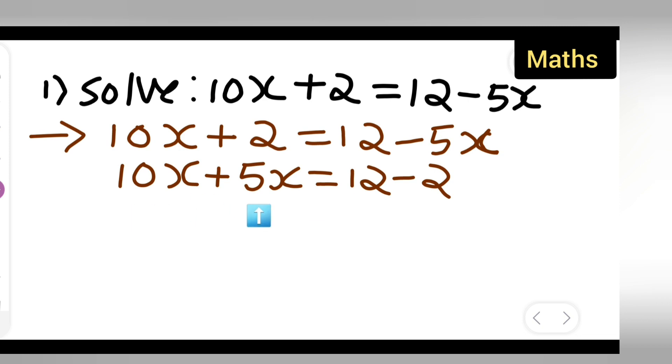Now 10x plus 5x is nothing but 15x. So write down 15x is equal to, now subtract, 12 minus 2 will give you 10.